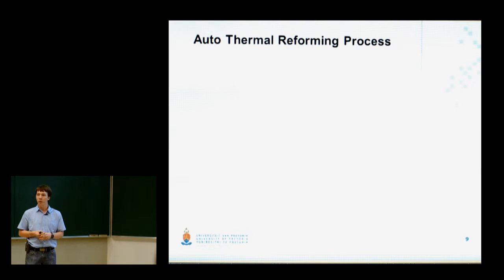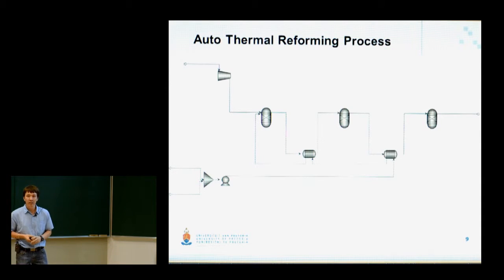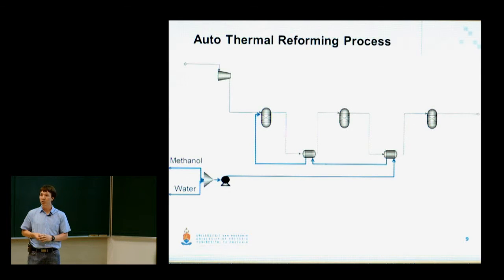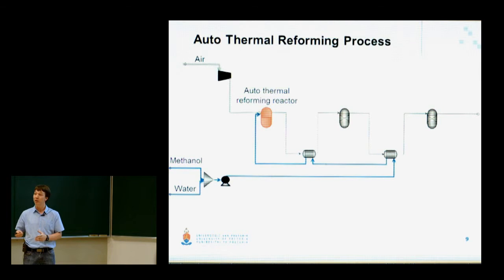Now let's consider the auto-thermal reforming process for a while. The auto-thermal process is overall adiabatic, so it does not exchange any heat with the environment. It also produces its own energy requirements and therefore it's known as auto-thermal. Here is the process which I've developed. Firstly, we have methanol and water which enter the system. They are mixed, go through a series of heat exchangers where they are vaporized before entering the auto-thermal reforming reactor. Secondly, air from the atmosphere is compressed directly into the reactor.